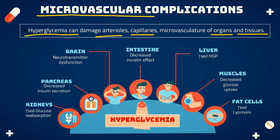For the causes of hyperglycemia, various organs are involved with various mechanisms behind them. In the kidney, there is an increase in glucose reabsorption, which will ultimately enhance the level of glucose in the body.